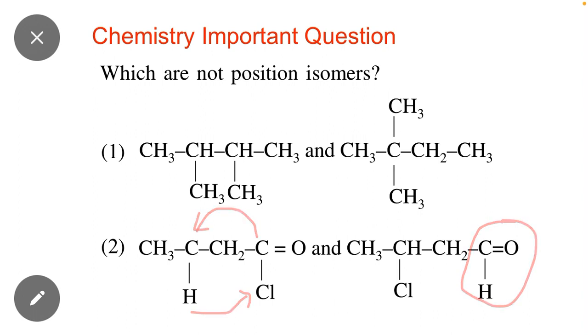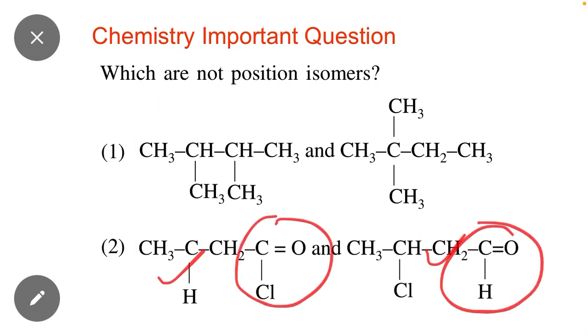Here you can see that in option number 2, both functional groups are changed. It means acid halide functional group changed to aldehyde functional group. It means if we change the position of a substituent, then a new functional group is formed. It means these two groups are not position isomers. Because in position isomers just function group changes position, not change function group. But in these options you can see that function group is also changed from acid halide to aldehyde. It means this is not a position isomers.